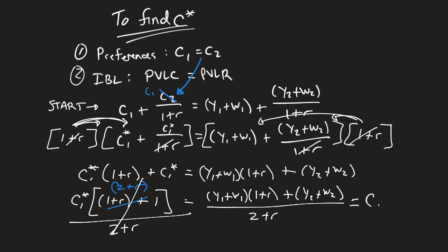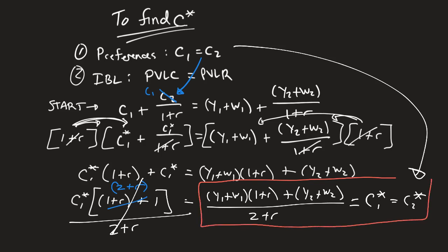Is equal to my C1 star, which is also equal to my C2 star, because we know back here C1 equals C2. So the optimal bundle is going to be when C1 star equals C2 star equals this number, which is Y1 plus W1 times 1 plus R plus Y2 plus W2 over 2 plus R.